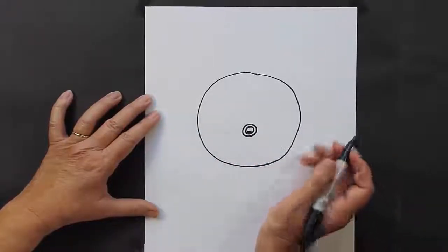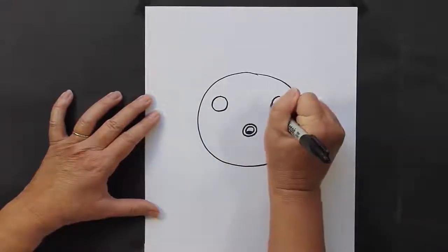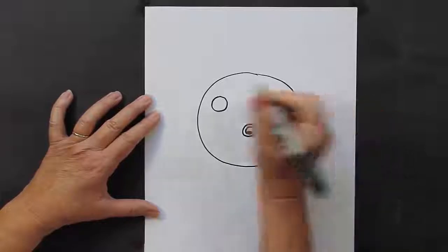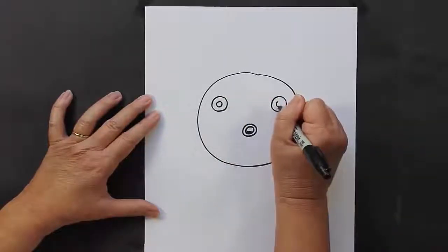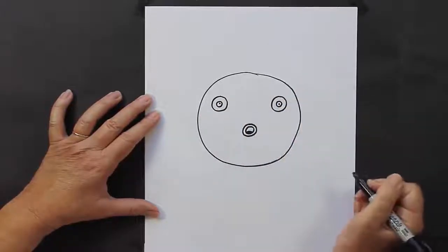All right, then we're going to do his eyes. So we have big circles, and then we have smaller circles, and then a dot right in the middle.